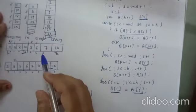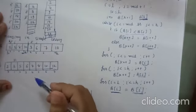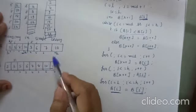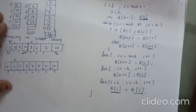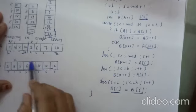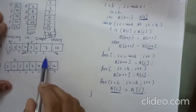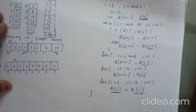Remember that merge sort is not in-place sorting. We discussed heap sort which is in-place sorting — meaning it does not require any additional array. But in this merging procedure we require an additional array, so merge sort is not an in-place sorting example.